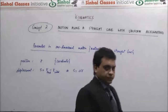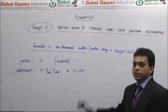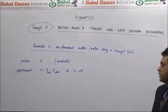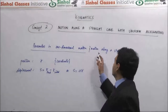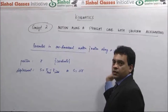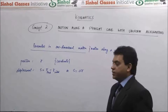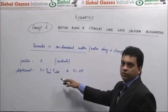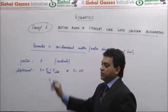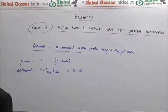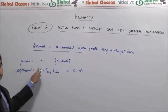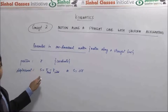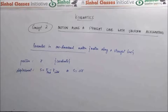In general, position is defined as a vector quantity, and displacement is the difference of final position vector minus initial position vector. But for motion along a straight line, we reduce the vector notation to a one-dimensional notation, where position is just a single coordinate — a single component of a vector — and therefore displacement is also a single component, defined as a scalar.